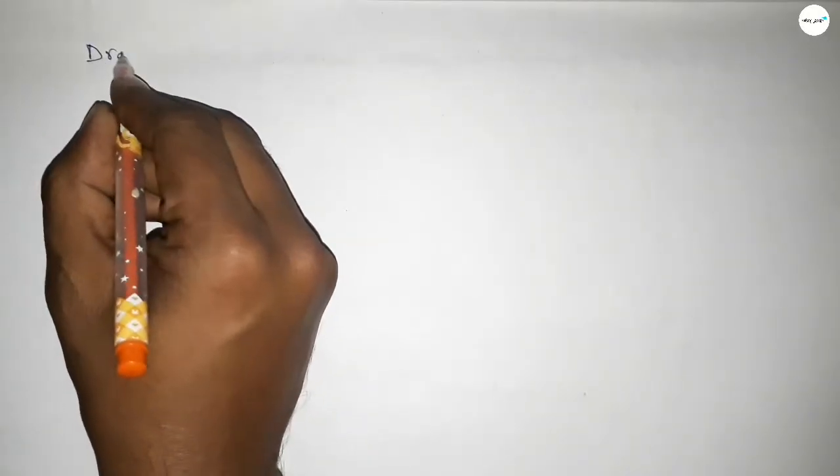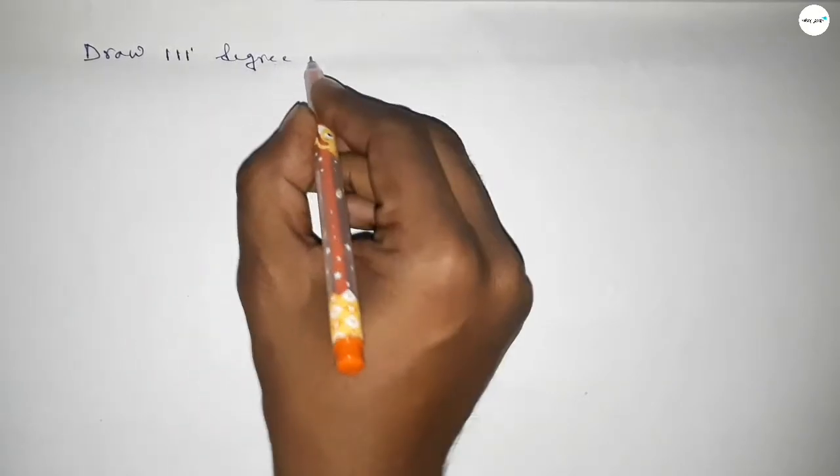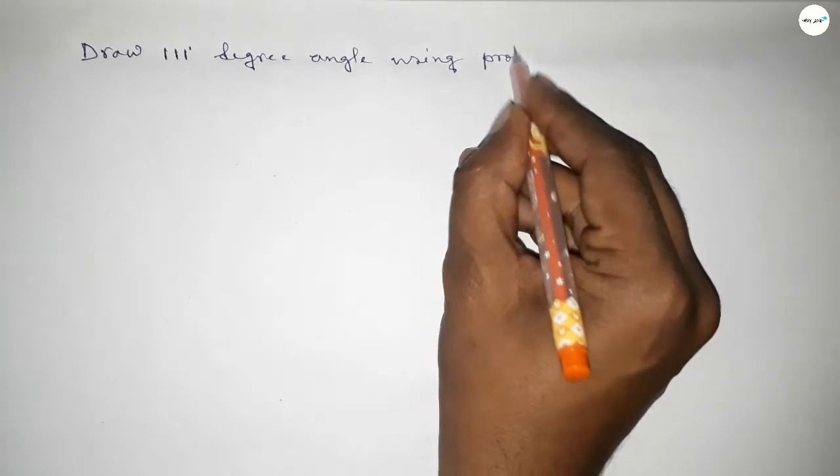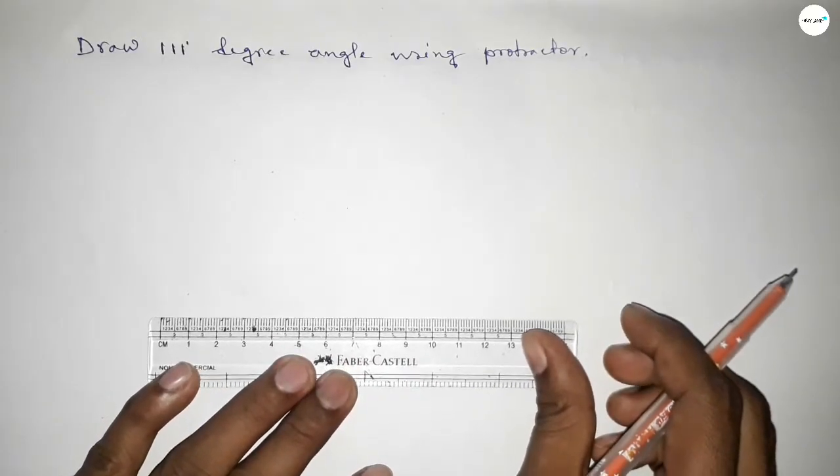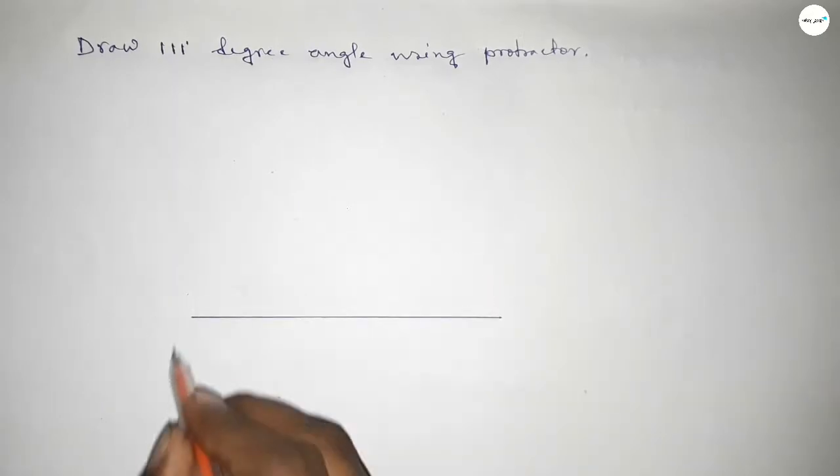Hi everyone, welcome to SSR Classes. Today in this video we have to draw 111 degree angle by using protractor. So let's start the video. First of all, we have to draw here a straight line of any length.